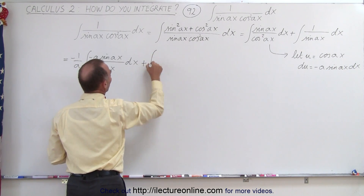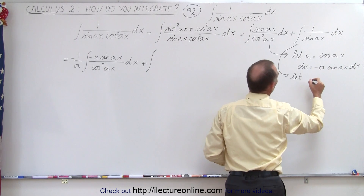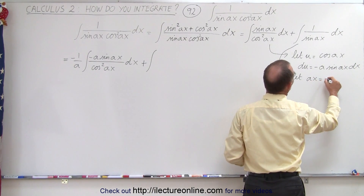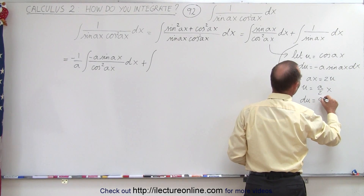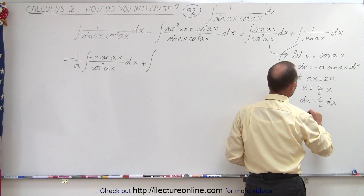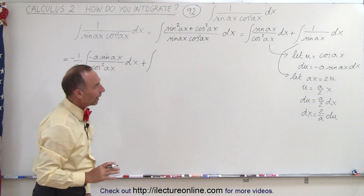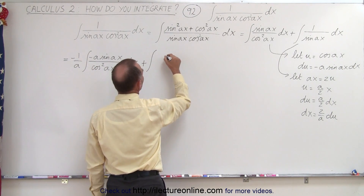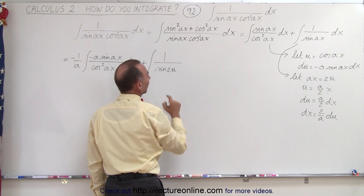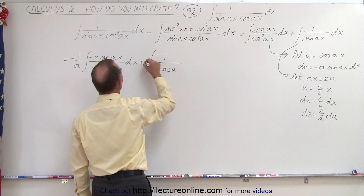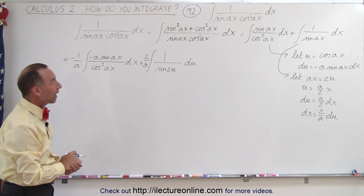For the second one, we have a little bit more of a challenge. What we're going to do here is let AX equal 2U, which means that U will be equal to A over 2 times X, and DU will be equal to A over 2 DX, or DX equals 2 over A times DU. So if we do that, instead of the sine of AX, we're going to get the sine of 2U, and instead of DX we write 2 over A out front, giving plus 2 over A times the integral of 1 over the sine of 2U DU.